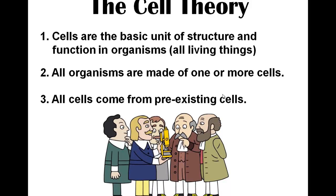And all cells come from pre-existing cells. This is the toughest of the three tenets because if we talk about evolution, the question becomes: where does the first cell come from? That first cell — we're not exactly sure what happened. It was probably a heterotroph, probably created in water, probably 3.8 to 4.0 billion years ago. But we'll talk about that when we get to geologic time.